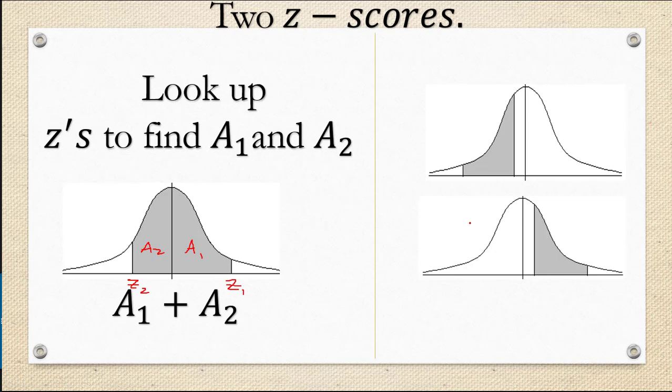On the other hand if both the z-scores are on the same side of the mean, for example you have two negative z-scores or if you have two positive z-scores, either way you're going to have to subtract the larger area minus the smaller area to get the shaded region.